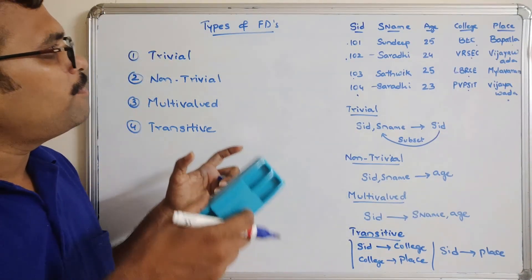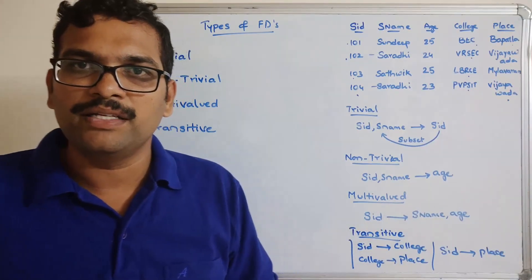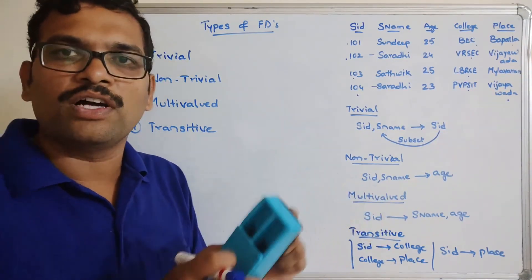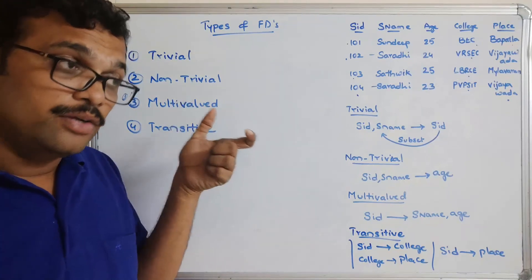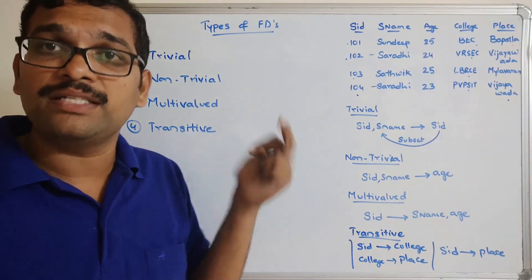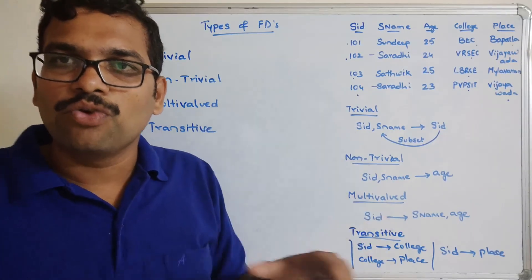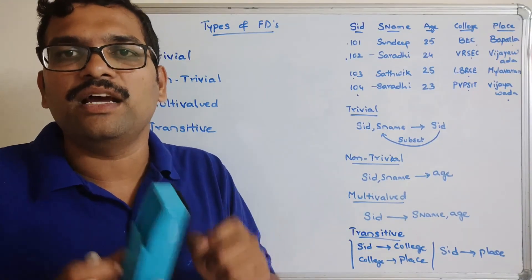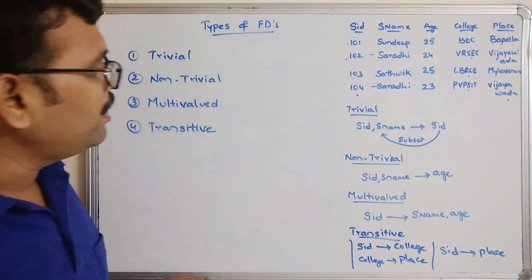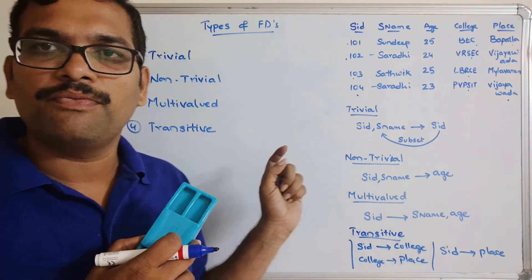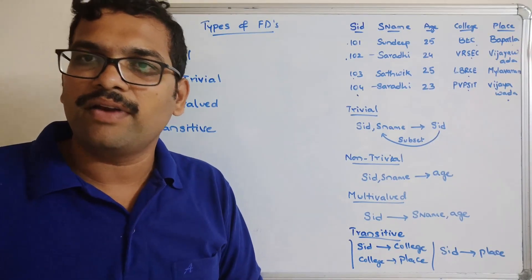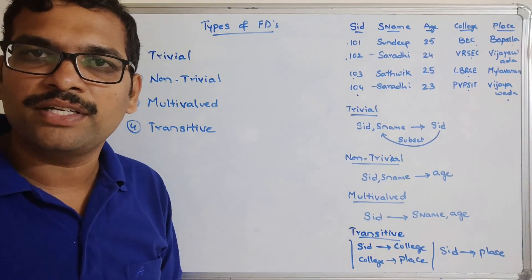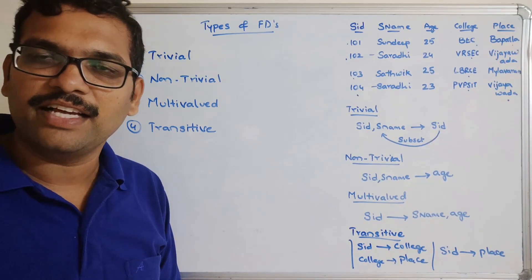If you are not aware about functional dependencies and their properties, I will post the complete DBMS playlist link in the description. Go through the three videos — functional dependencies, properties, and types — so that the normalization process in the next sessions will be easily understandable. If you have any doubts, feel free to post in the comment section. Like, share, subscribe, and thanks for watching.